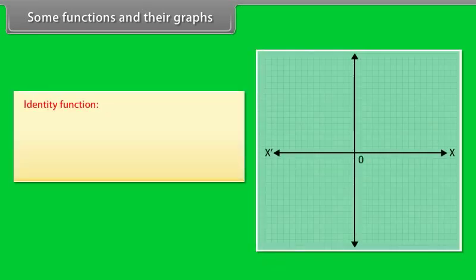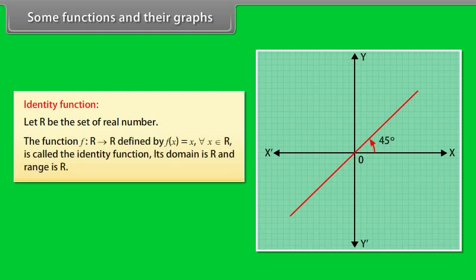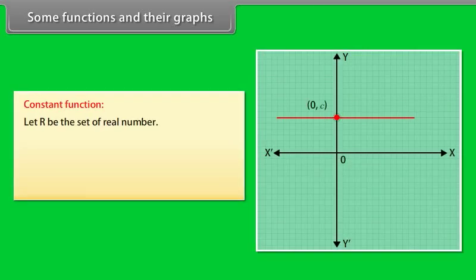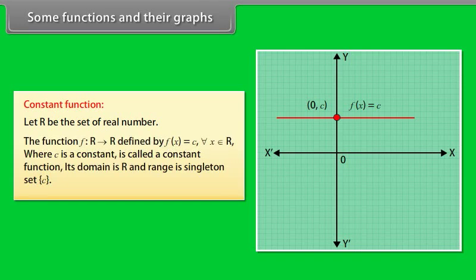Some functions and their graphs. Identity function: Let R be the set of real numbers. F is a function from R to R defined by F(x) = x for each x belonging to R, called the identity function. Its domain is R and range is R. Constant function: F is a function from R to R defined by F(x) = c for each x belonging to R, where c is a constant. Its domain is R and range is the singleton set {c}.